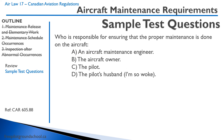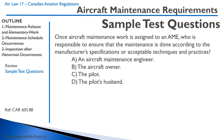Who is responsible for ensuring that proper maintenance is done on the aircraft? A) An aircraft maintenance engineer. B) The aircraft owner. C) The pilot. The correct answer is the aircraft owner. And once aircraft maintenance work is assigned to an AME, who is responsible for ensuring the maintenance is done according to the manufacturer's specifications or acceptable techniques and practices? This time it is the aircraft maintenance engineer's responsibility — the owner gives the work to the AME, and the AME makes sure it's done correctly. That concludes this lesson on aircraft maintenance requirements.